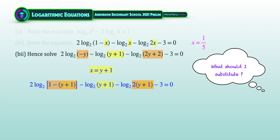This confirms that x equals y plus 1. So we use the previous answer where x equal to 1 over 5 is now equal to y plus 1. Solving for y gives the answer: y equal to negative 4 over 5.